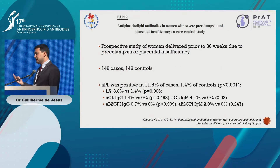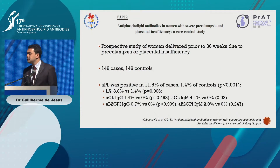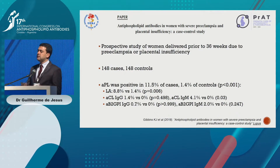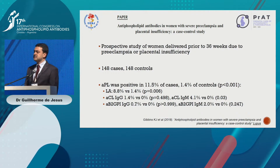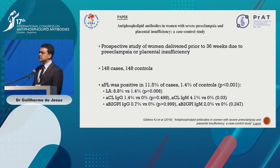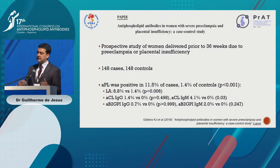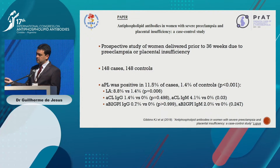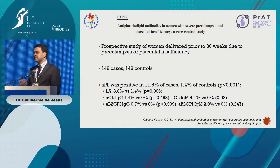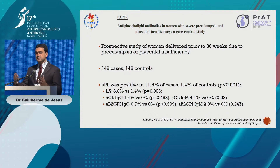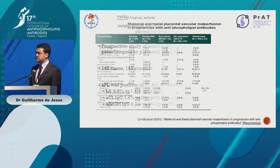The best study I know was by Professor Branch, who looked at patients with premature delivery at 36 weeks or less, with preeclampsia or placental insufficiency. In this case-control study, 11% of patients had positive APL — a high number, suggesting we should screen for APL in patients with premature preeclampsia or placental insufficiency. However, we must remember that 90% of patients do not have APL positivity.